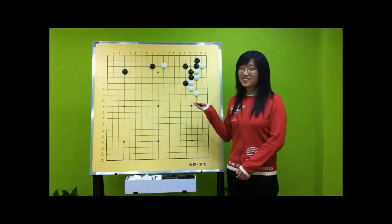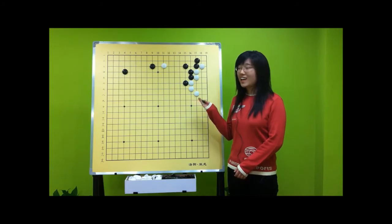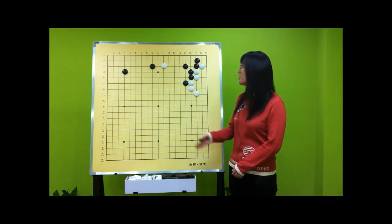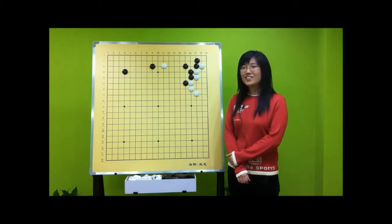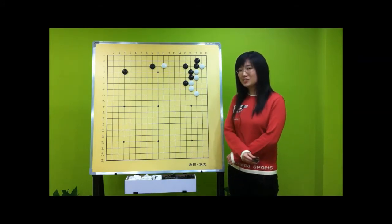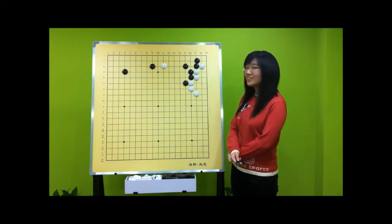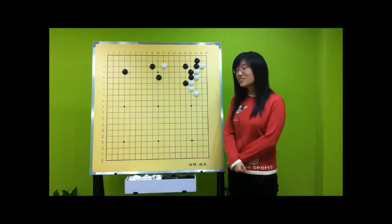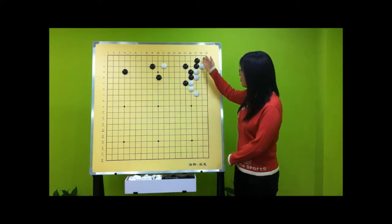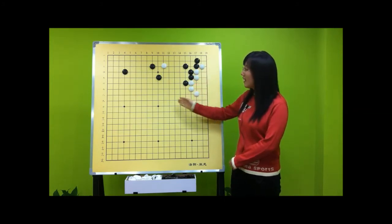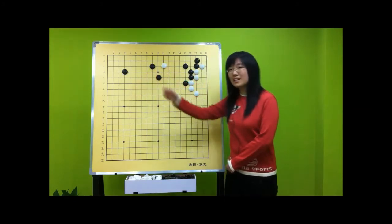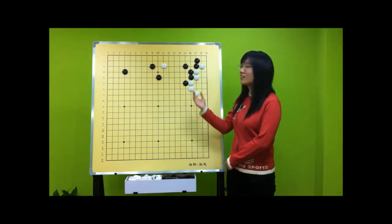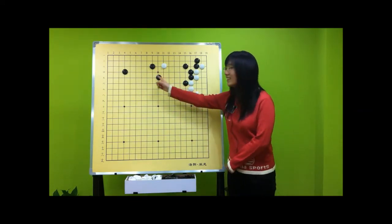Let's look at the next example. It is Black's turn — which direction will you choose to attack White? Can you get the answer in one second? The answer should be here, because this is Black's strong place and this is Black's weak place. We should attack from weak to strong, so the answer is here.